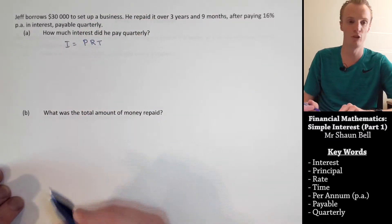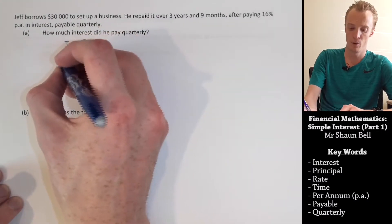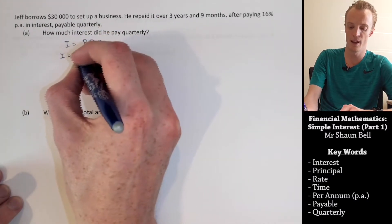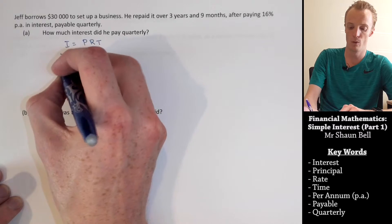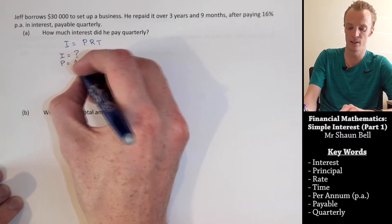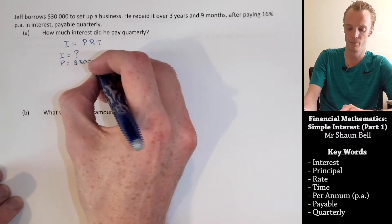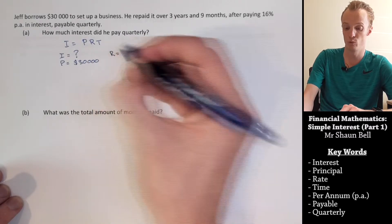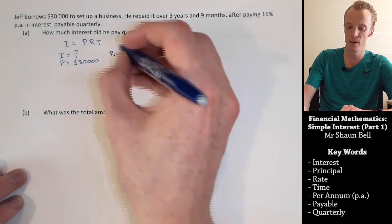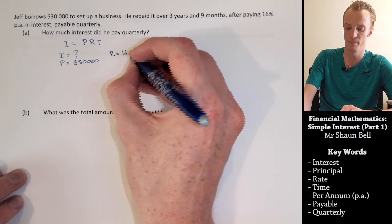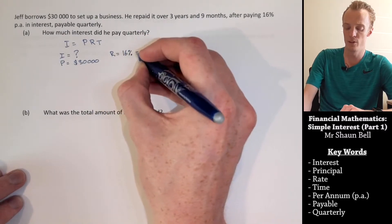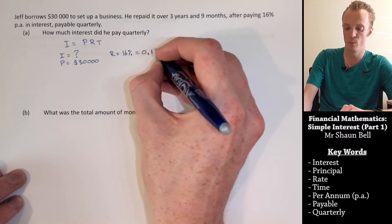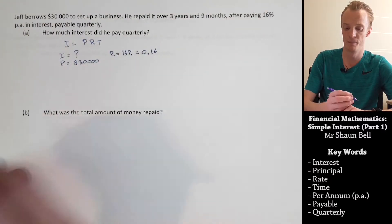Now, let's find our information. I, or the interest, we don't have. P, or the principal, is $30,000. R, or the rate, or interest rate, is going to be 16% per annum, which is equal to 0.16 as a decimal.